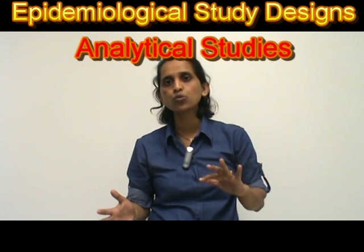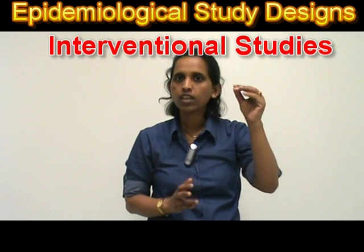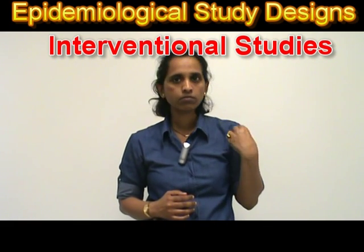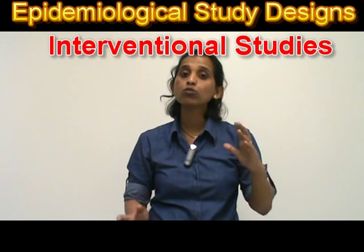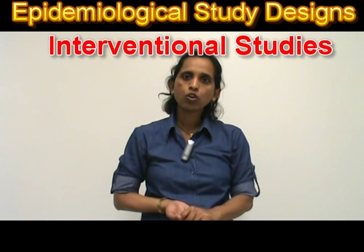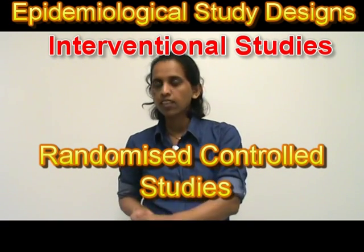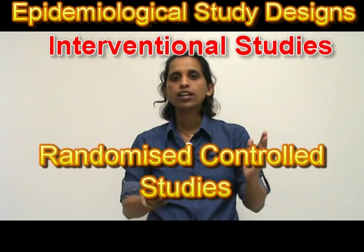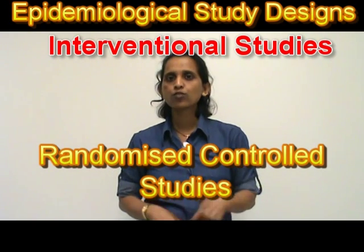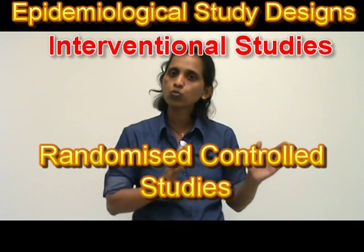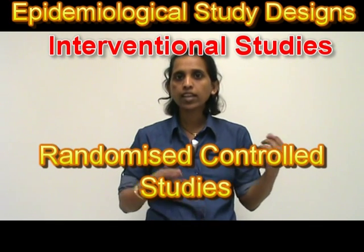Moving on to interventional or experimental study designs — as the word suggests, the investigator makes a deliberate intervention to change the course of the disease and check whether that intervention works. In epidemiology, the gold standard for experimental studies is the randomized controlled trial (RCT). These are trials done with different population groups to study the effect of a drug, treatment, or therapy. At the community level, we have vaccine trials, community trials, or field trials, which study the effectiveness of a new intervention such as a vaccine or a health education campaign.